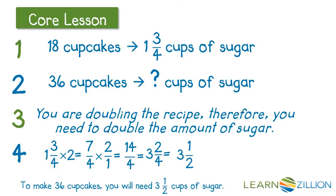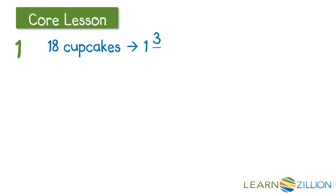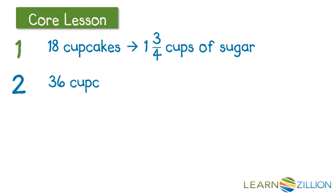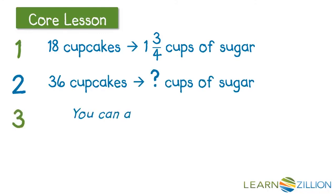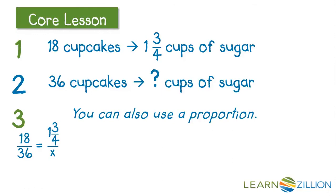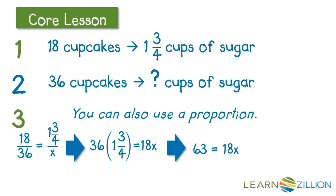There's another way we can solve this problem as well. If we have 18 cupcakes that needs 1 and 3/4 cups of sugar and we're going to make 36, we can find out how much sugar by making a proportion. We set up the proportion and multiply 36 times 1 and 3/4 and 18 times x using cross products. We change 1 and 3/4 into an improper fraction and multiply to get 63 on the left side of the equal sign and 18x on the other. We divide both sides by 18 and still get the answer 3 and 1/2.